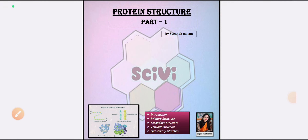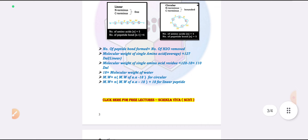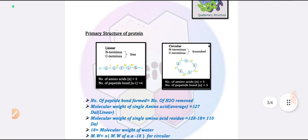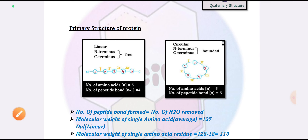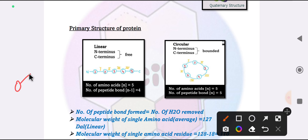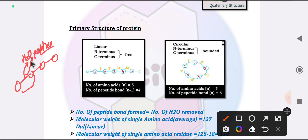Hello students, welcome to Cnja Viva — the Gohti science of living. This is your educator Sugan Sharma. We are going to talk about primary protein structure, part one. The key is simple: amino acids linked by peptide bonds through the removal of water, forming an amide linkage. This is our primary structure.